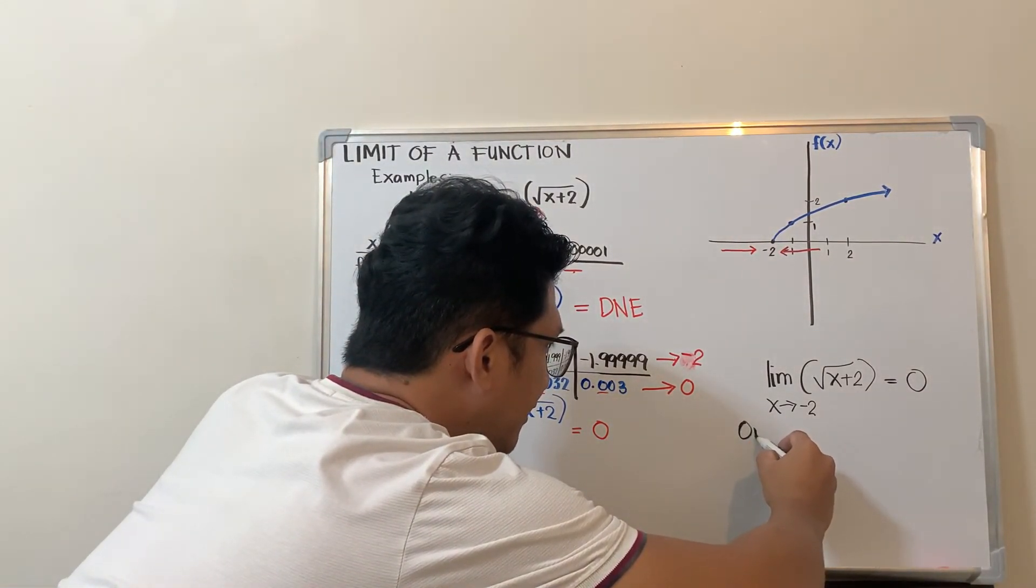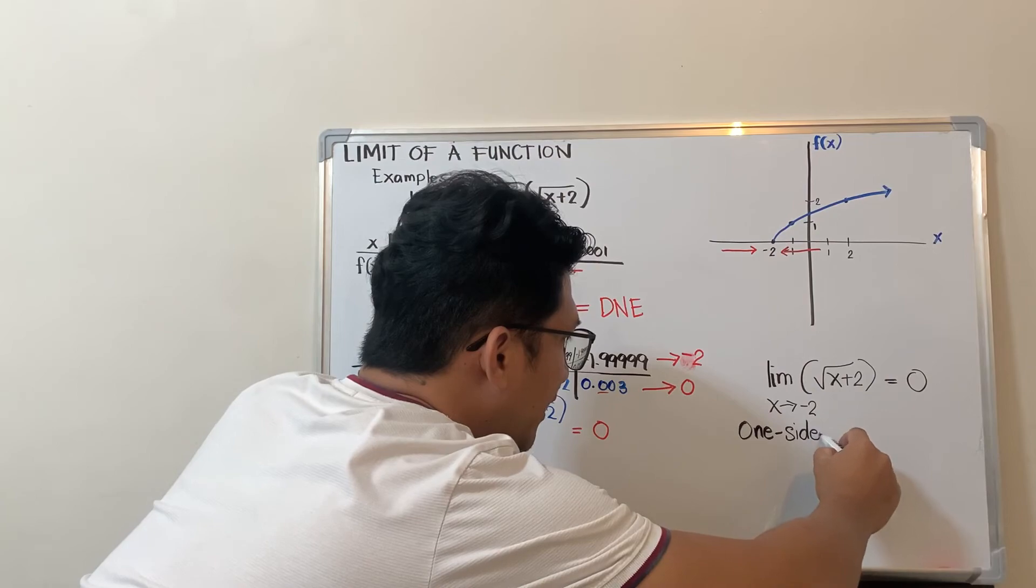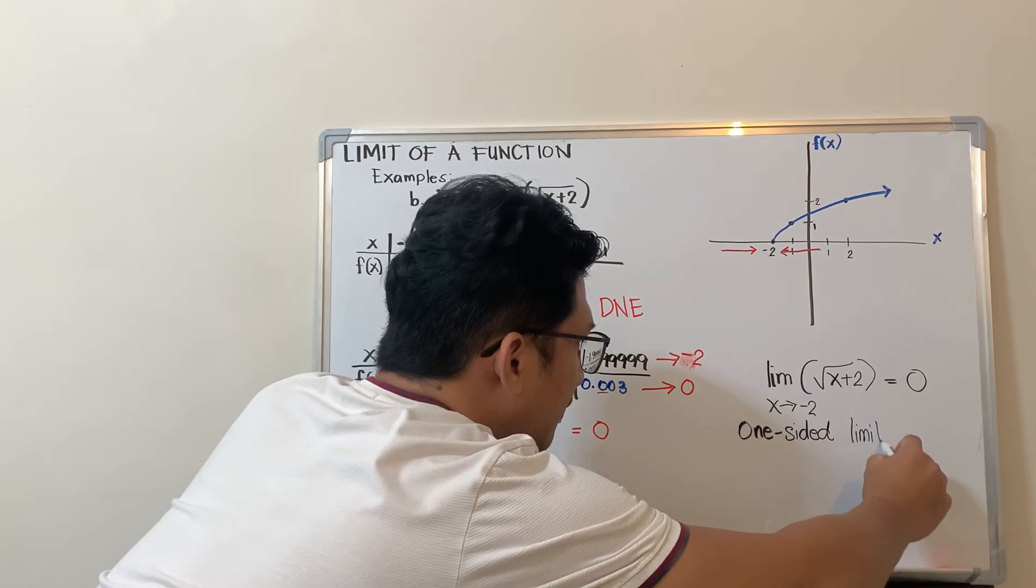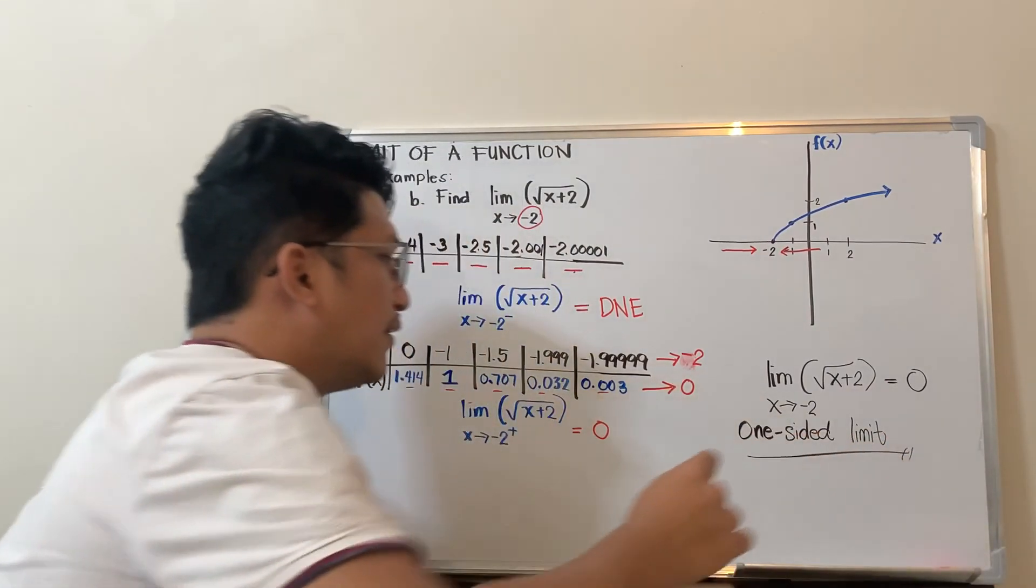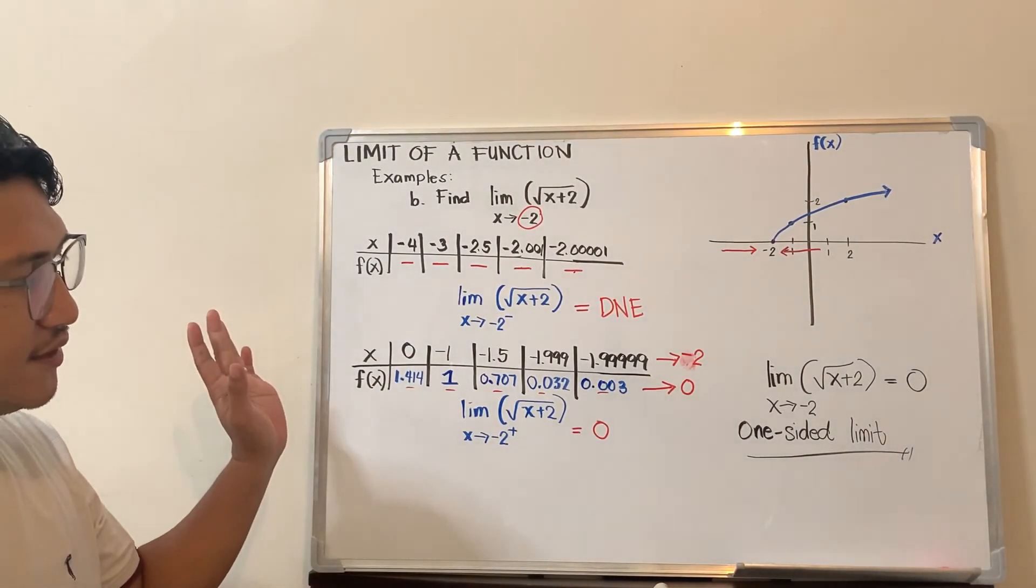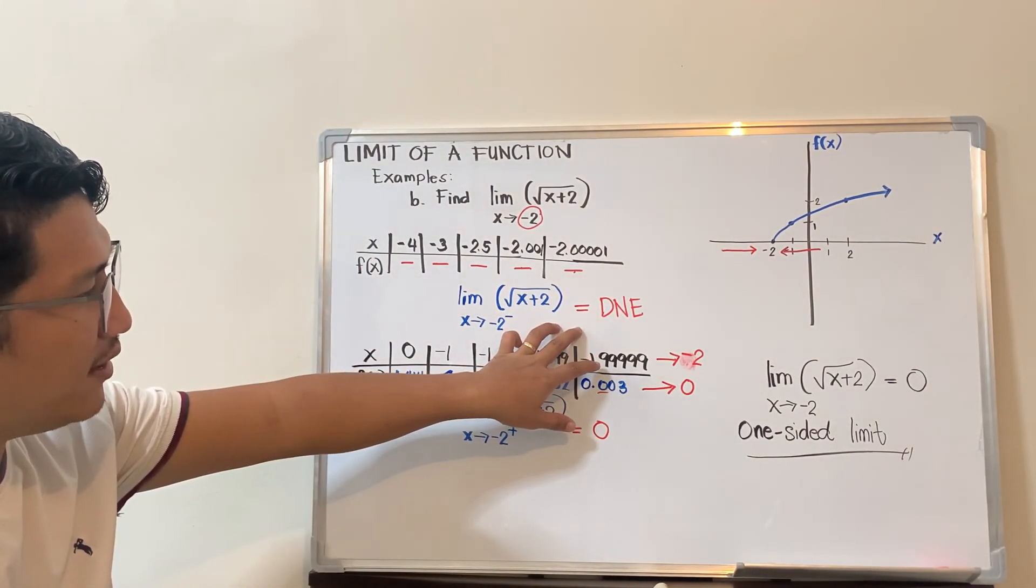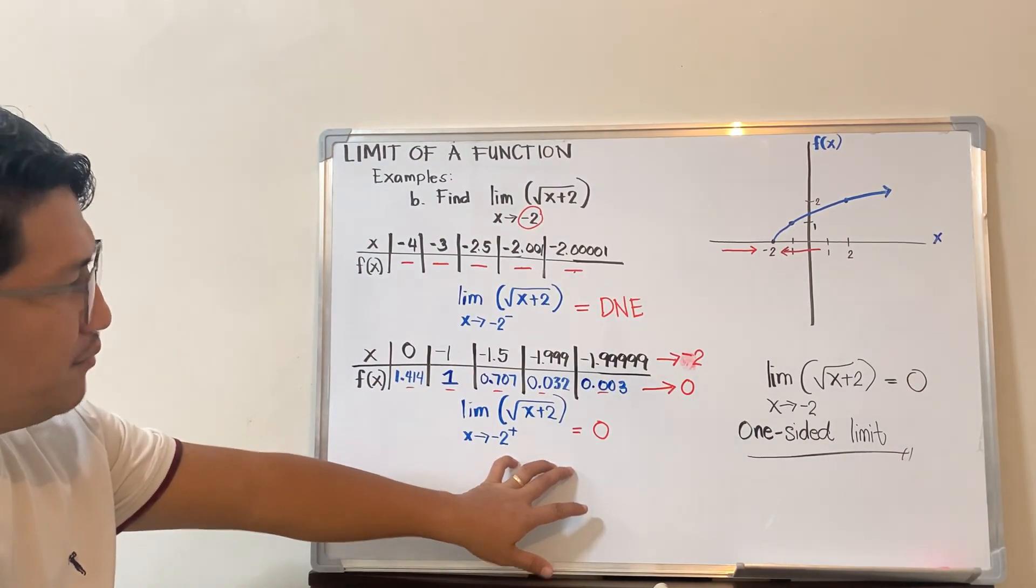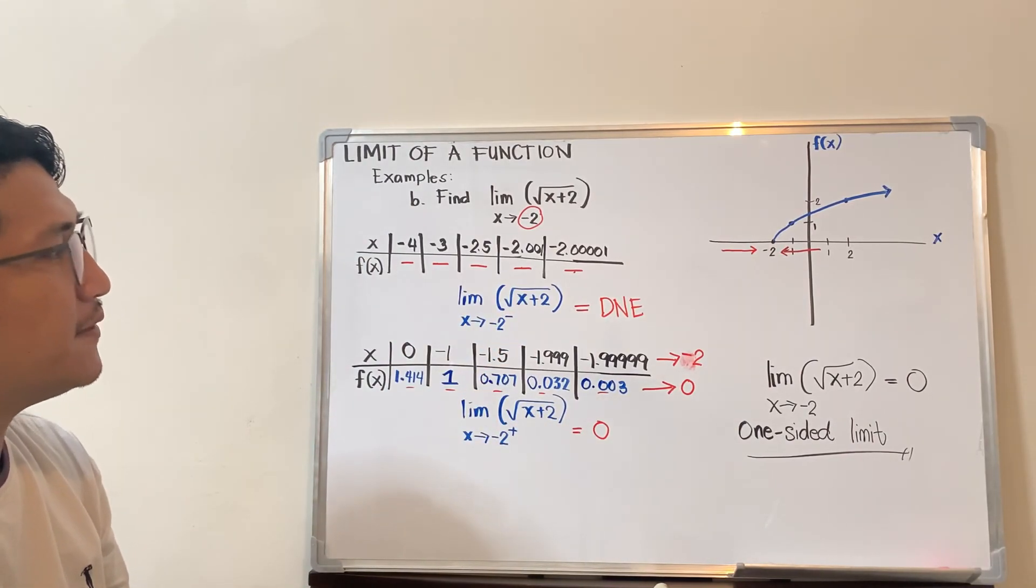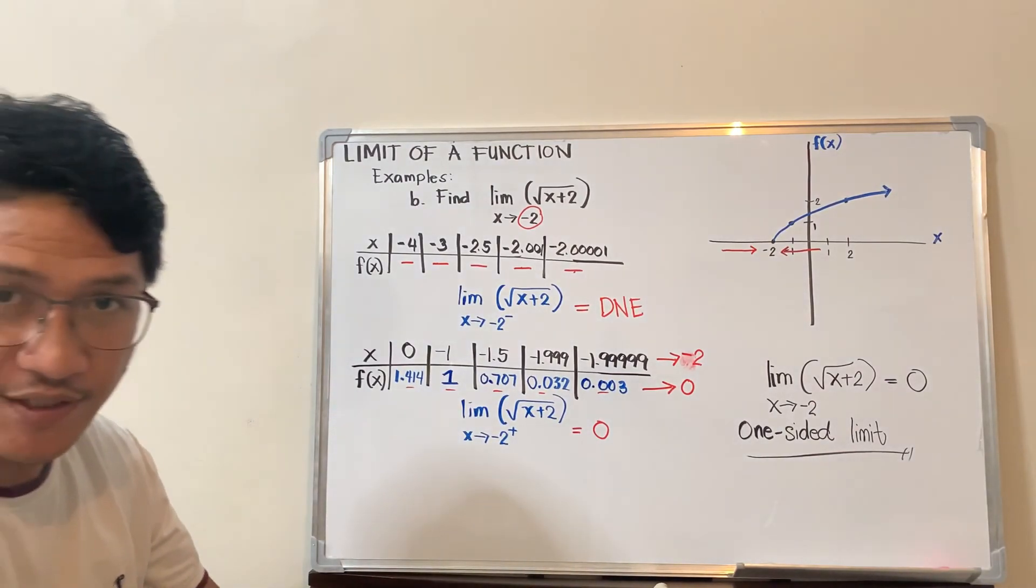Remember, this is what we call a one-sided limit. One-sided limit is when the limit on one side does not exist while the other side exists. One side, the left, doesn't exist; the other side, the right, exists. So we call it a one-sided limit. This is for this example, guys. See you in the next one.